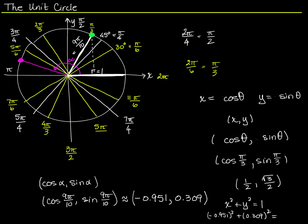For the pink point, negative 0.951 squared plus 0.309 squared should give 1. Doing that off screen, I actually got 0.999882. The reason I didn't get exactly 1 is because these are rounded numbers — this was an approximation. To prove these coordinates belong to a point on the unit circle, I'd actually have to type in the cosine of 9 pi over 10 all squared plus the sine of 9 pi over 10 all squared, which would give exactly 1. Since I'm approximating, this is as close to 1 as I can get with values rounded to the nearest thousandth.